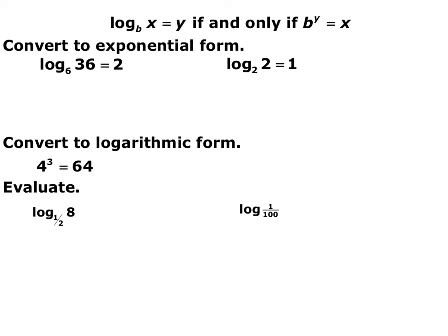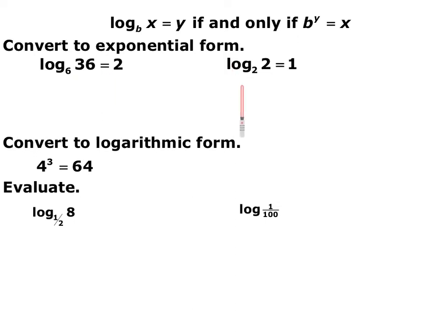So log base b of x equals y if and only if b to the y equals x — it goes both directions. Here we have two problems in logarithmic form: log base 6 of 36 equals 2, and log base 2 of 2 equals 1. Go ahead and write those in exponential form.